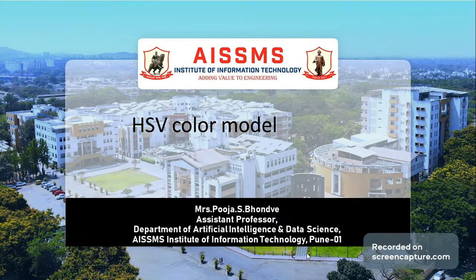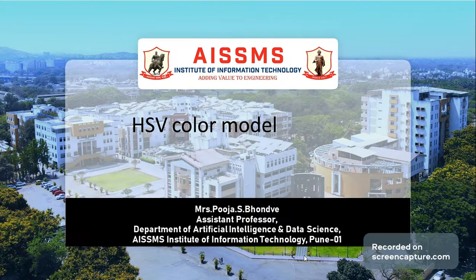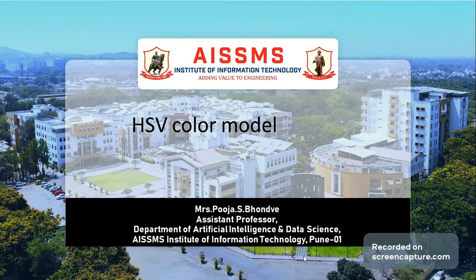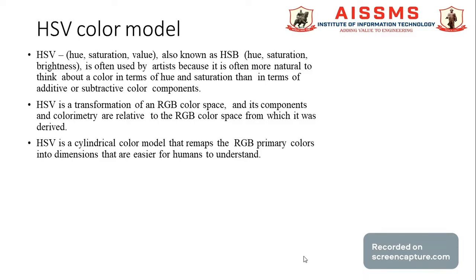Unlike the RGB color model and CMYK, which are primary color models, HSV is closer to how humans perceive color. It has three components: hue, saturation, and value. This color space describes color in terms of hue — the color's shade — and saturation — the amount of gray in the color.